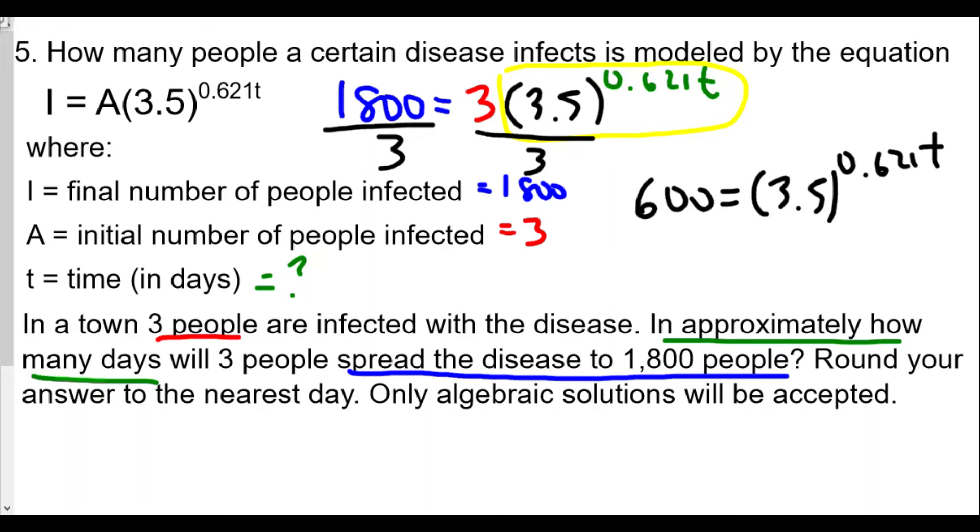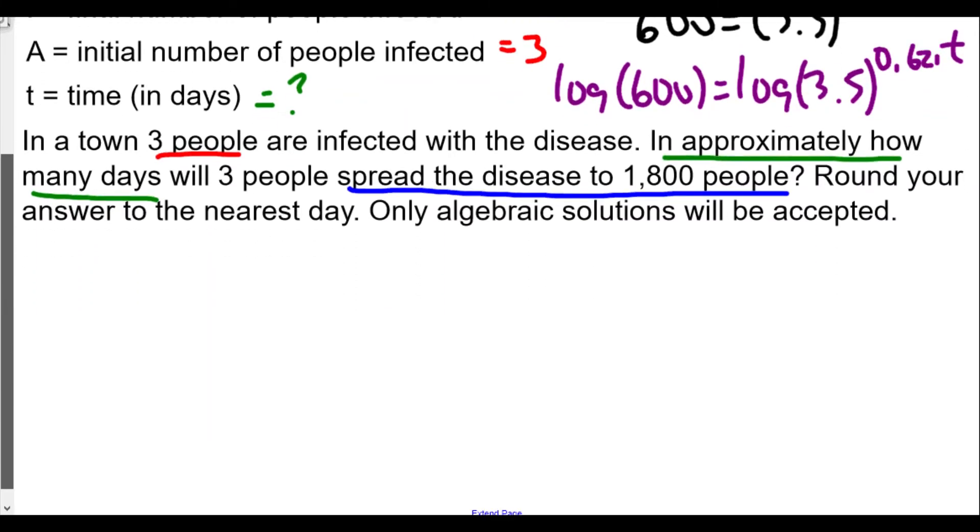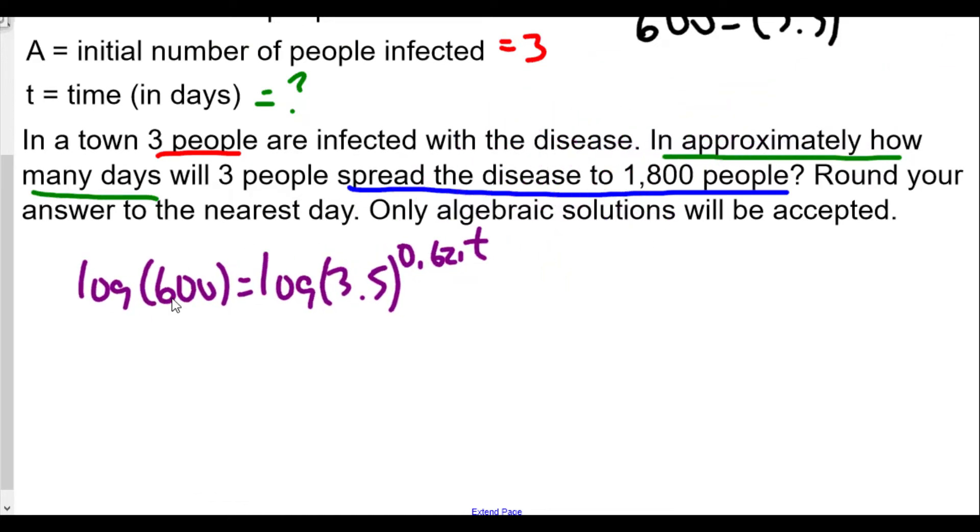We're going to use this equation to now solve for t. Since our variable is the exponent, we're going to use logs. We're going to plug both the 600 and the 3.5 raised to 0.621t into the log function, so we're going to get log(600) = log(3.5^(0.621t)). Whenever we have an exponential equation, when the bases are not equal to each other and our variable is an exponent, we'll take both sides, plug both sides into the log function, log base 10.